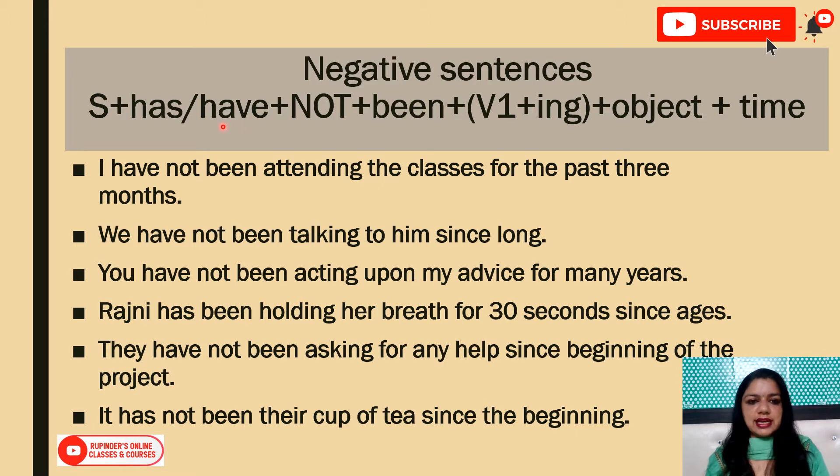In negative sentences the structure is: Subject + has/have + not + been + V1-ing + object + time. 'Not' always comes at position three, after the helping verb.